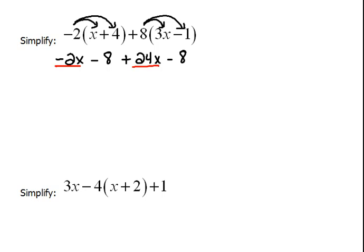Now we can combine our like terms. Negative 2x and 24x can combine to give us 22x and negative 8 and negative 8 can combine to give us negative 16.